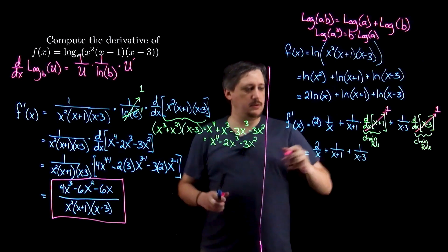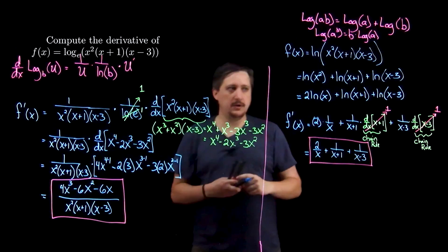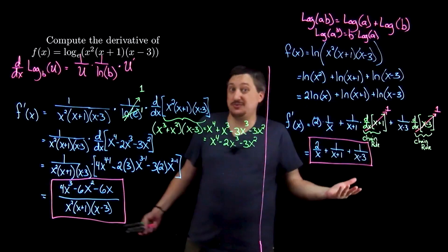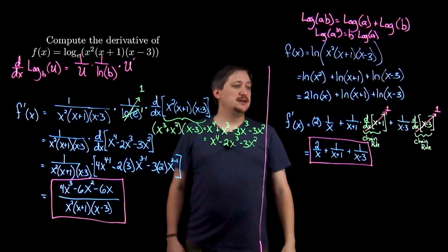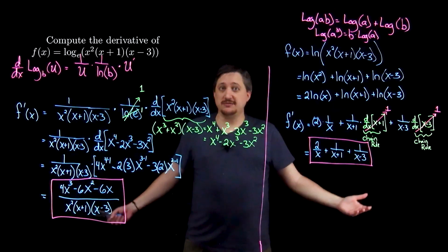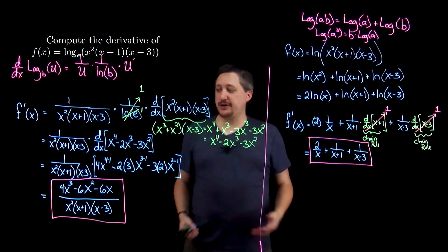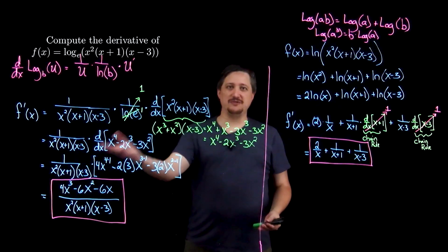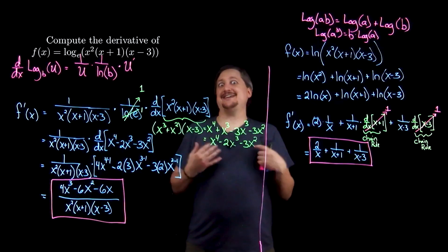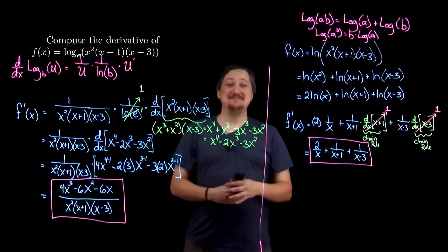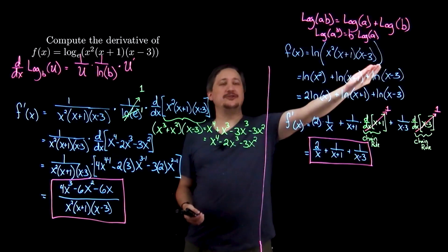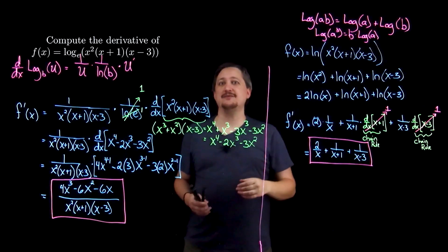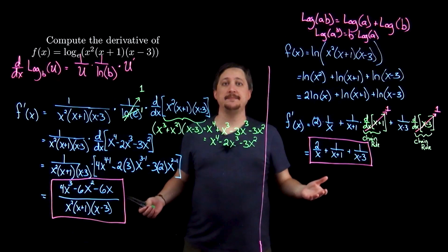The derivative step was pretty trivial — just 1 over a bunch of stuff. I had to keep track of the chain rule, but it turns out the chain rule didn't do anything. My final result was just done — I didn't have to do any multiplying out, no triple product rule, no product rules at all. Way less room for error, way shorter process. All you had to do is remember your log rules. This is why remembering log rules can be super helpful — it can save you a ton of time and effort when taking a derivative.